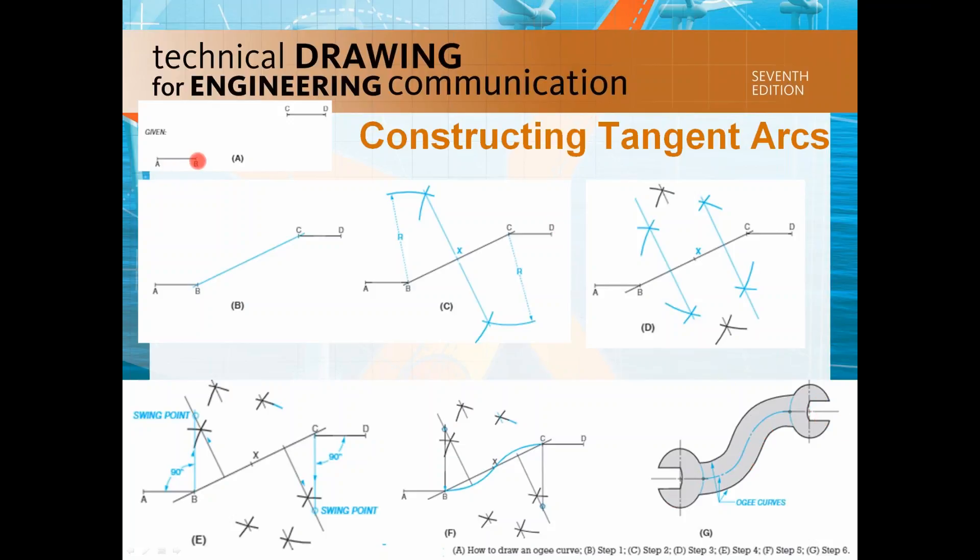These two parallel lines AB and CD are given. Now we are going to connect this point B and C and then you are going to draw a bisector line on line BC.